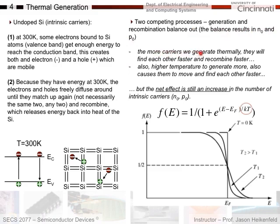The more carriers generated thermally, the faster they find each other and recombine, because they're at higher density. If you increase temperature to increase thermal generation, carriers also move faster and find each other faster. So both higher concentration and faster movement increase the recombination rate. Both having a higher density and allowing carriers to move around faster cause recombination to increase.